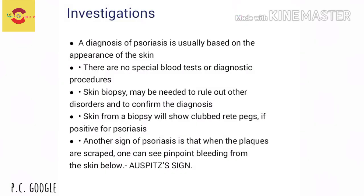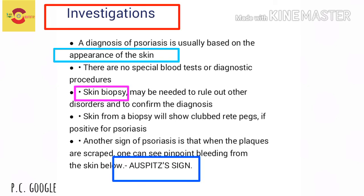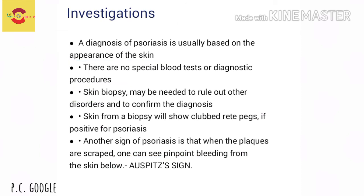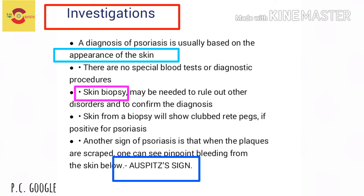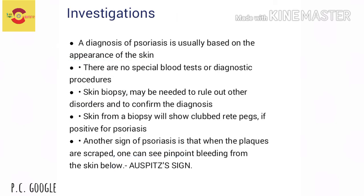Investigation of psoriasis is generally based on the appearance of the skin. There are no special blood tests or diagnostic procedures. Skin biopsy may reveal the histopathological features described, and the Auspitz sign is an important clinical feature looked for in diagnosis.